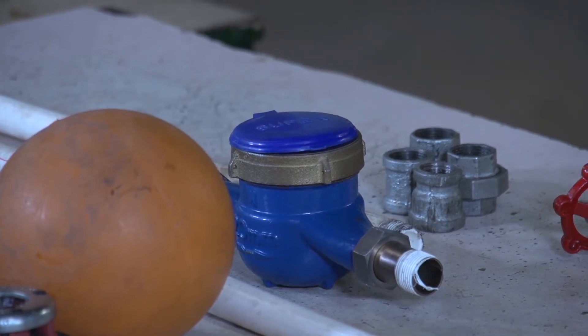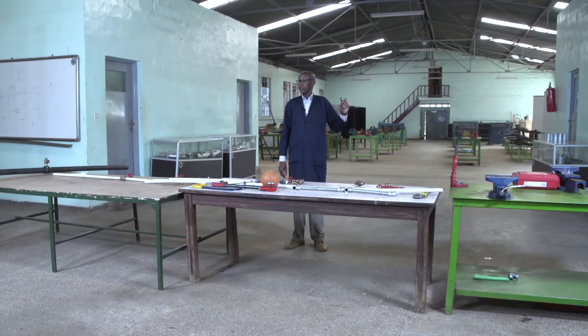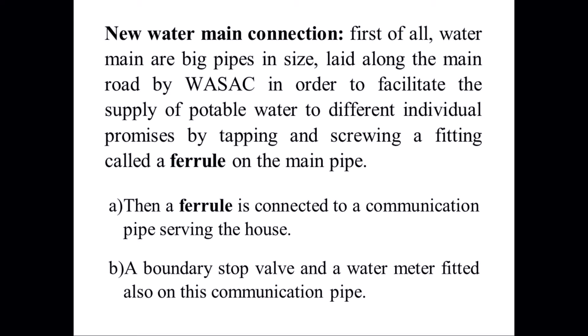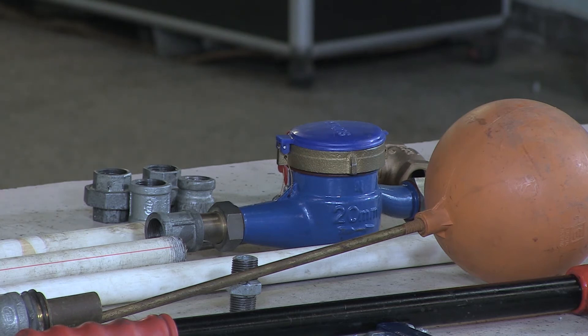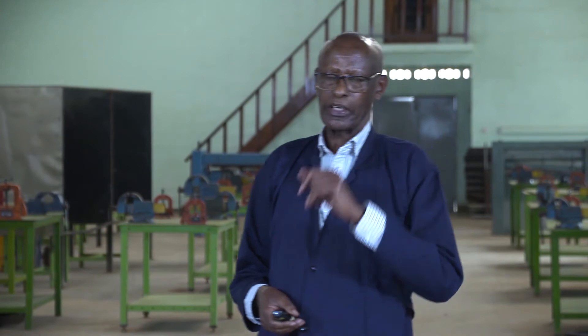The pipe coming from the meter going ahead is called the service pipe. It goes directly to the direct or indirect system in the house. The water main, ferrule, communication pipe, boundary stop valve, and water meter all belong to WASAC, and maintenance is done by the water authority.